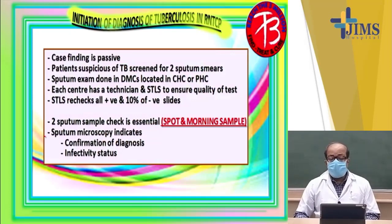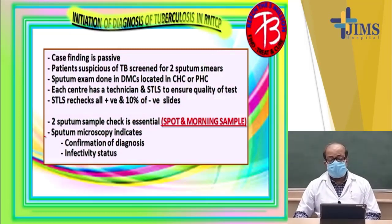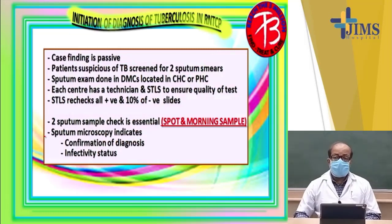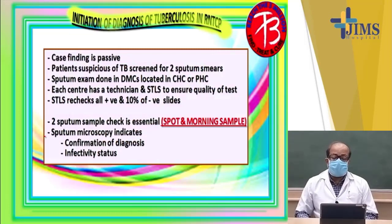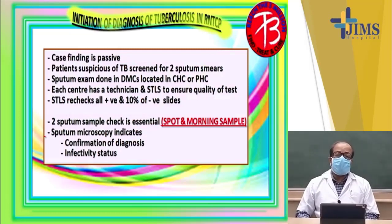Now, in this slide, we discuss the initiation of diagnosis of tuberculosis in RNTCP. Case finding is passive. Patients suspicious of tuberculosis are screened for two sputum smears, brought under RNTCP coverage with help from village health guides, ASHAs, DOT center providers, or community health workers. Sputum examination is done at the designated microscopy center located in CHCs and PHCs. Each center has a technician and a STLS — Senior Technical Laboratory Supervisor — who ensures quality by rechecking all positive cases and 10% of negative cases.